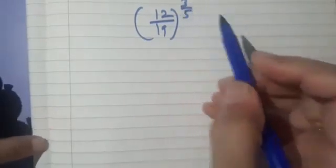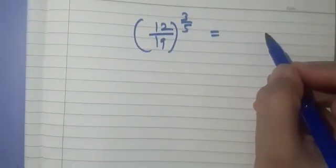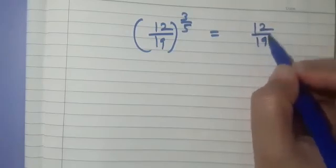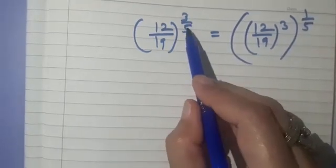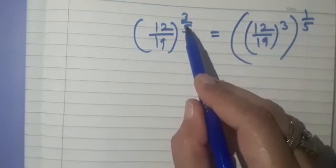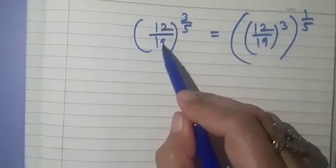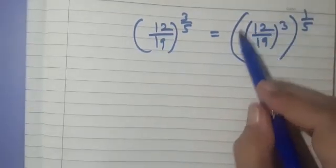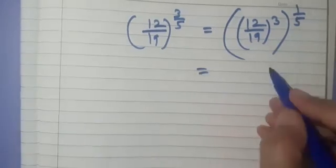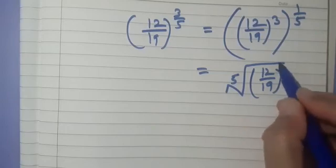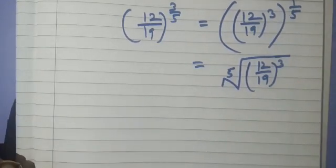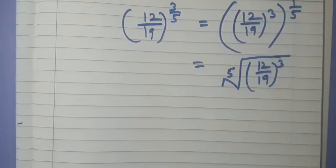Next example: 12 upon 19 raised to the power 3 upon 5. We write it as (12 upon 19) raised to the power 3, raised to the power 1 by 5 — splitting 3/5 as 3 × (1/5). So 3 is the power of 12/19, and this becomes the 5th root of (12 upon 19) cubed.